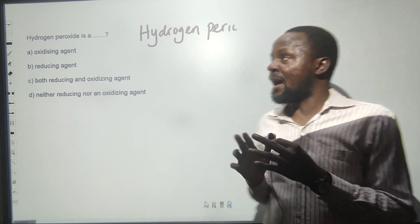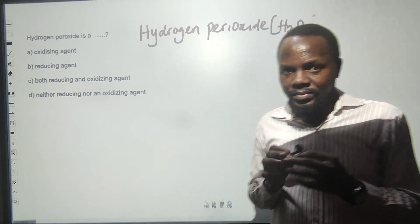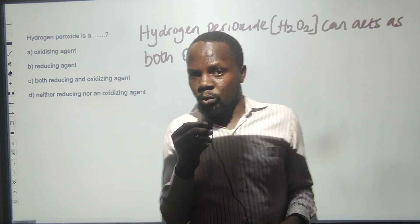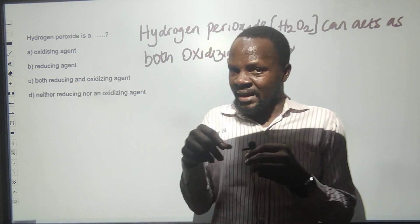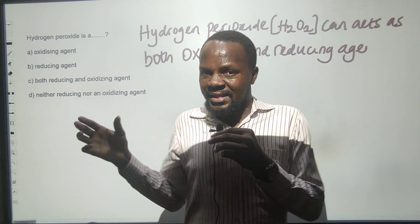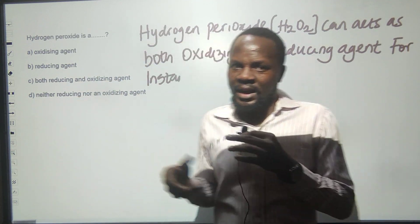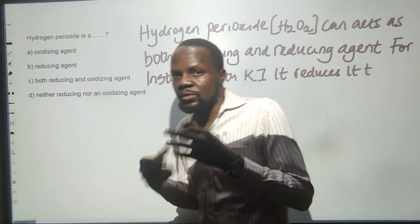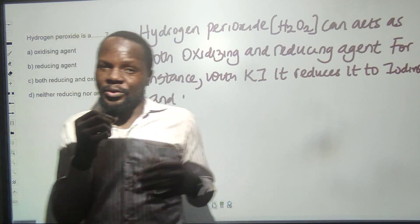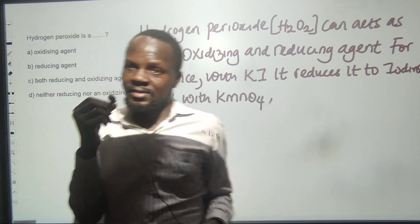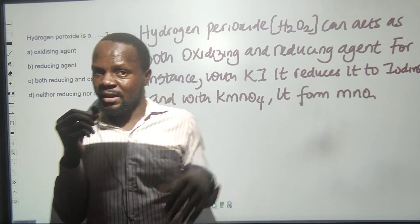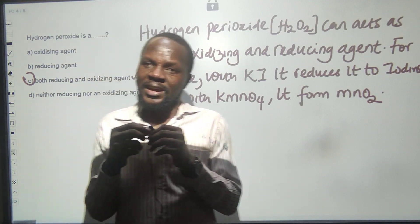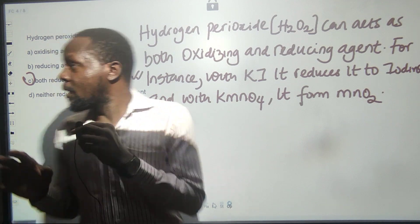Hydrogen peroxide can act as both an oxidizing agent and a reducing agent. If you react it with potassium iodide, iodide would be reduced to iodine, and it has acted as an oxidizing agent. Those agents that get reduced in redox reactions are oxidizing agents, while those that get oxidized are reducing agents. With KMnO4, H2O2 will oxidize into manganese dioxide, and when it oxidizes, it acts as a reducing agent.